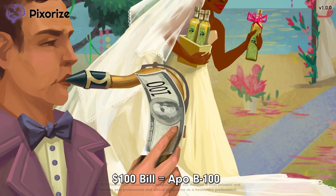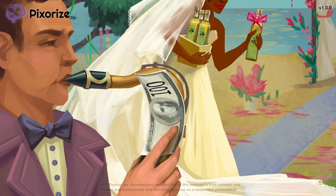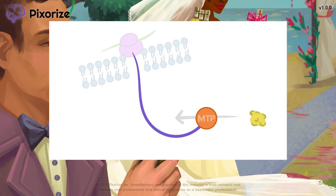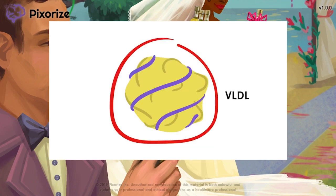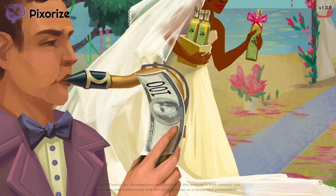ApoB100 is the key structural protein in VLDL. In fact, there is only one ApoB100 protein per VLDL molecule. MTP stands for Microsomal Triglyceride Transfer Protein, and since it's a triglyceride transfer protein, it transfers triglycerides and cholesterol to ApoB100 — and this makes sense because ApoB100 is VLDL's main structural protein. After lipidation, ApoB100 is now called VLDL, which can be secreted from the liver into the circulation, where it will deliver endogenous triglycerides to the rest of the body.